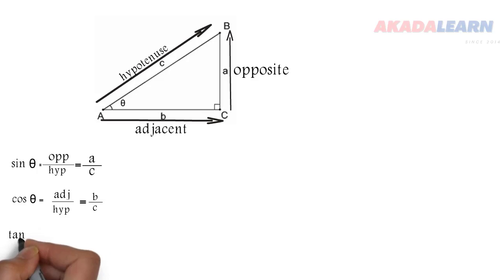Lastly we have tan theta, which is the ratio of opposite over adjacent. Our opposite there is A and our adjacent is B.